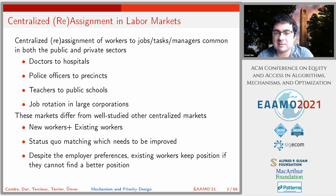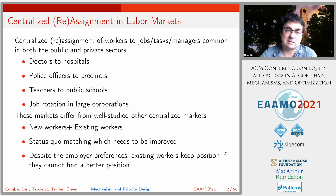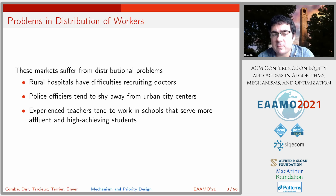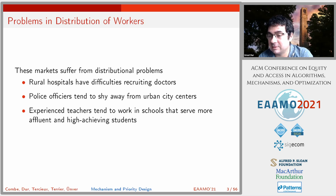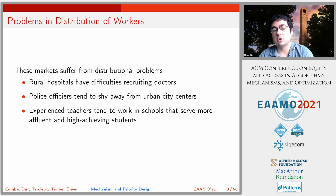These three points make these markets different from the centralized matching markets studied in the literature. When we look at these markets, we can observe distribution problems. For example, rural hospitals in the United States have difficulties recruiting doctors. The motivating example of this paper is that experienced teachers tend to work in schools serving more affluent families and high-achieving students.